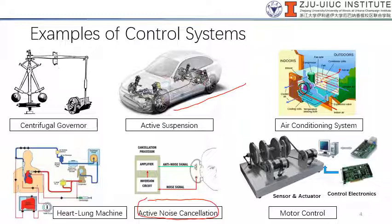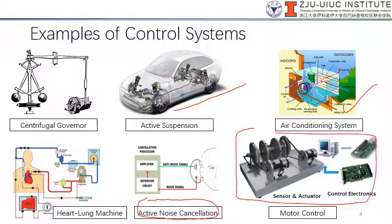Other interesting examples include the air conditioning system, which you see very often. Using temperature sensing, it can reach the desired temperature set by the user. In motor control — something you will encounter in the lab — an encoder or sensor attached to the motor feeds back to the actuator to control the motor at a steady speed or particular position. There are position control, speed control, and force control, depending on the sensor used.